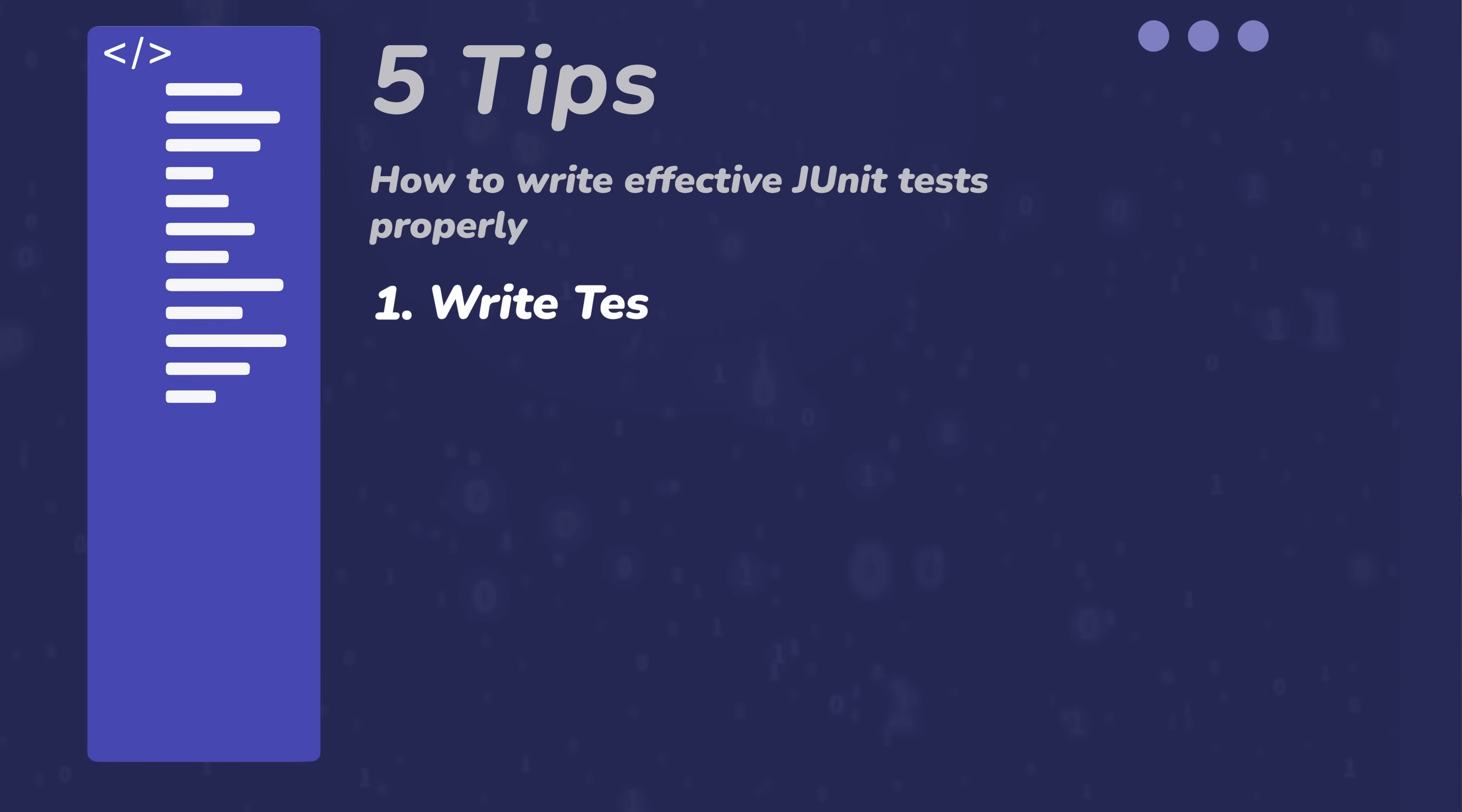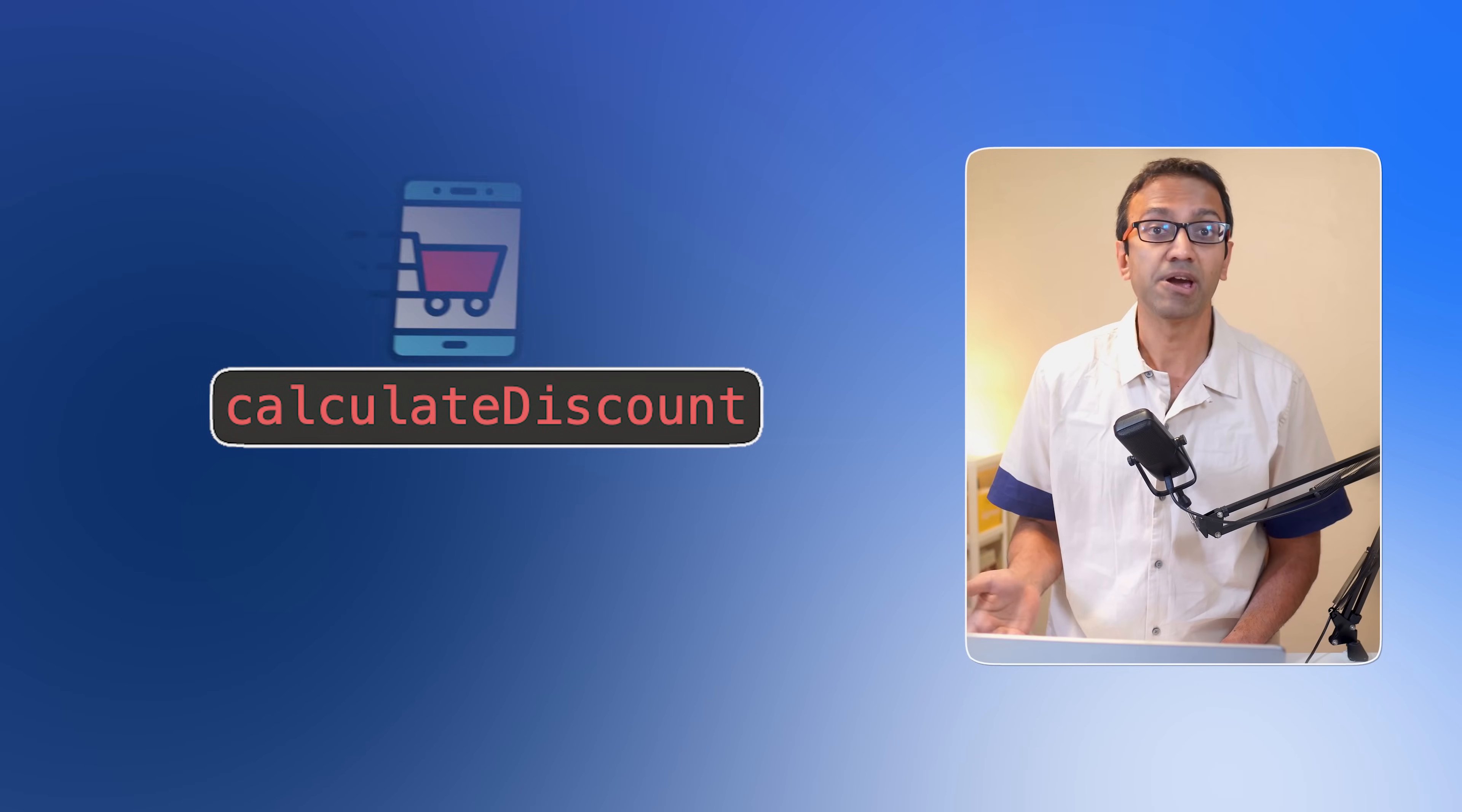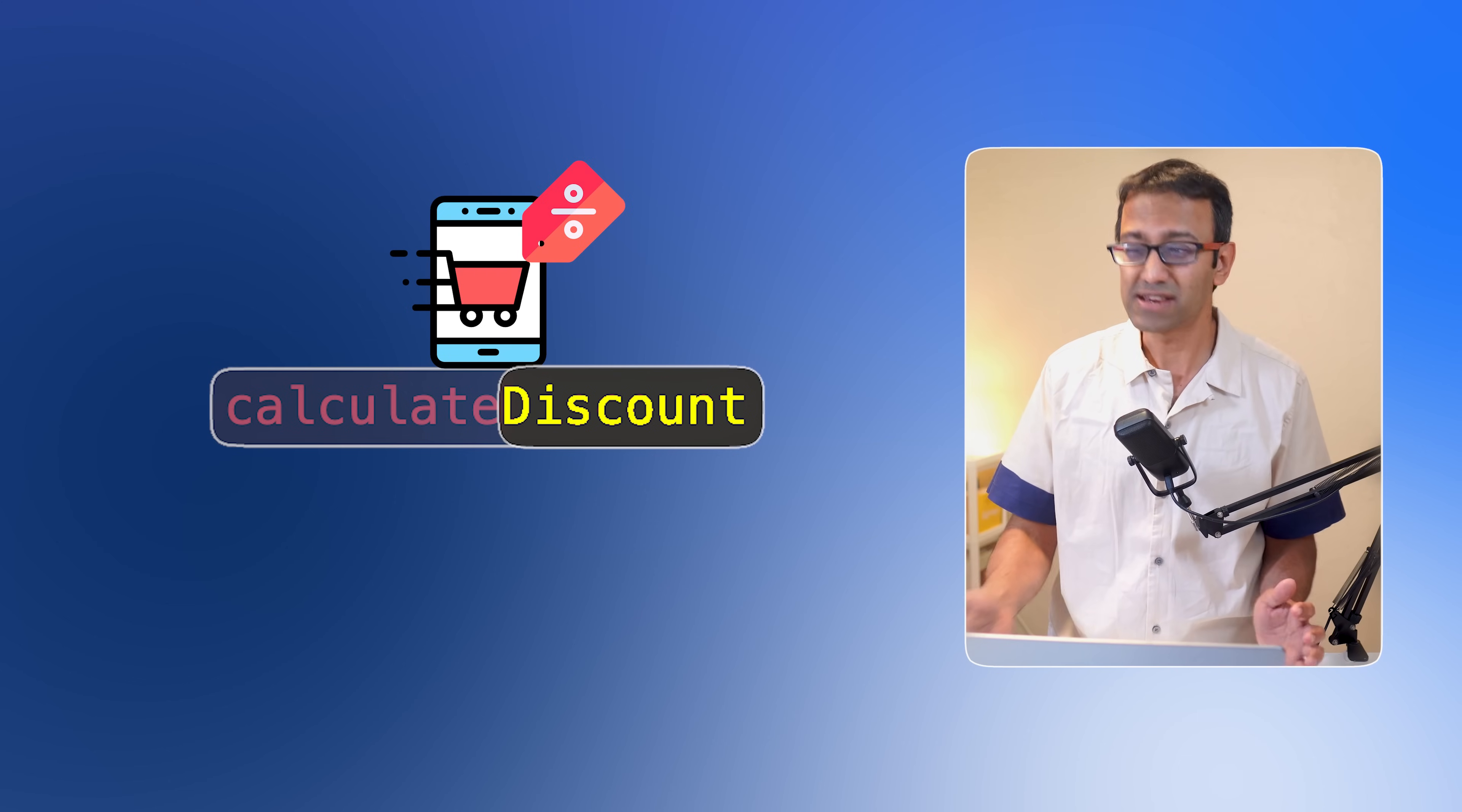Starting with tip number one: write tests that are focused on one aspect. Write tests that zero in on just one thing. Let's look at a practical example. Say we have a function called calculate discount in our shopping cart application. This method finds and returns how much discount can be applied to the items in your shopping cart. And if there is a discount, it auto applies it. As you can see, this has two behaviors.